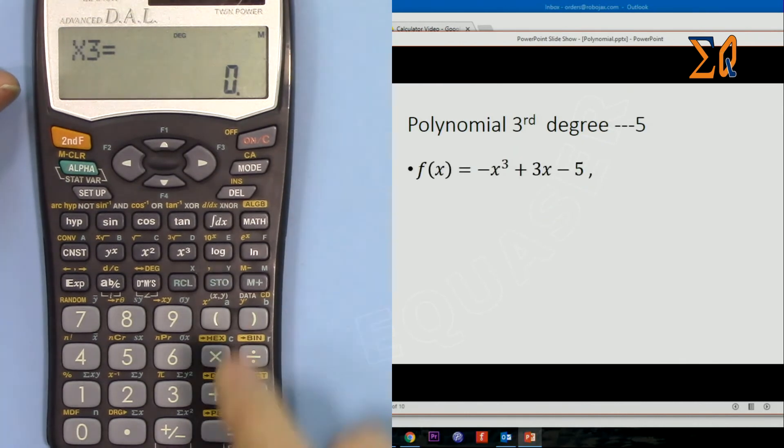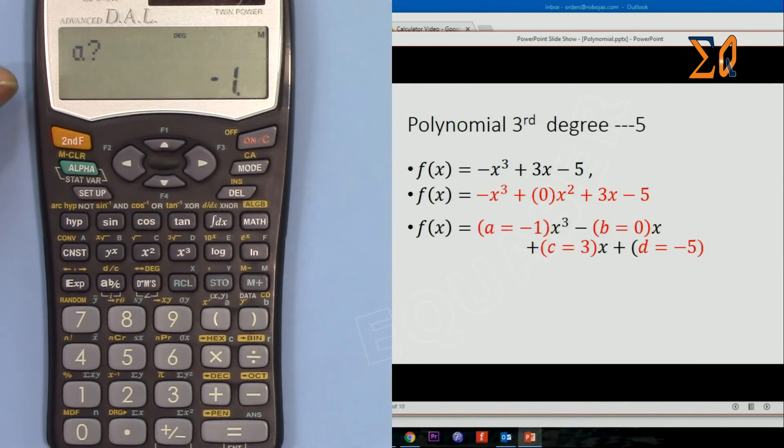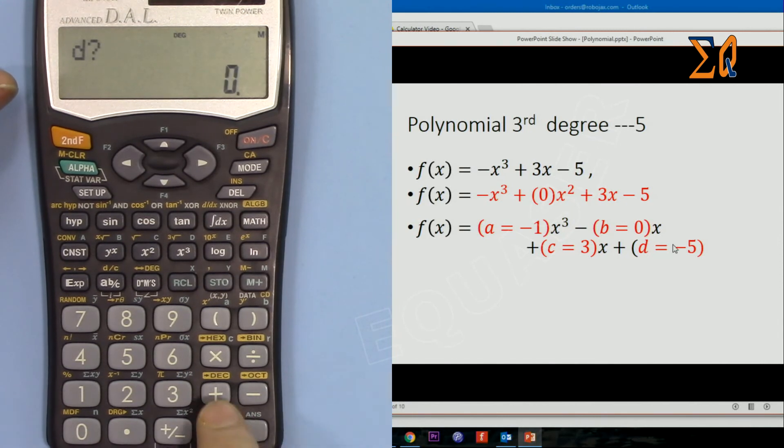Now let's do this one. Because it's the same cubic, I will not change it, just press. So now again we have no value here for the second term, so a is -1, b is 0, and then c is 3, and d is -5.